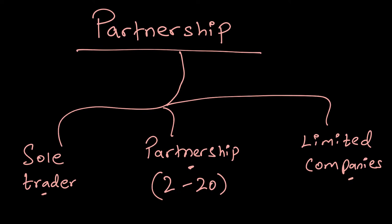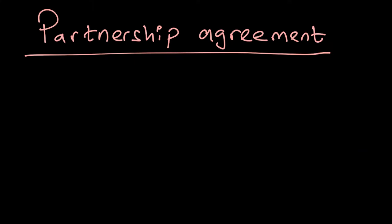In order to decide this, at the time of forming a partnership we draft something called a partnership agreement. When a partnership agreement is drafted, it lists down all the essential details, for example: